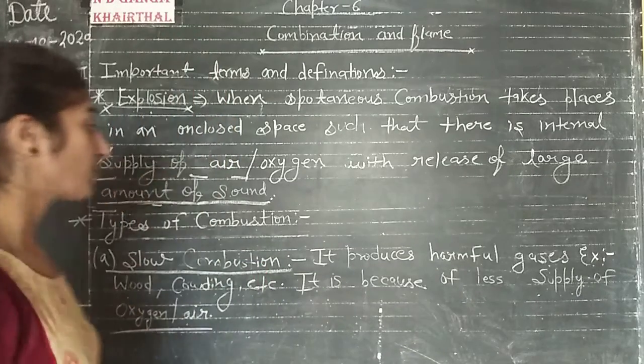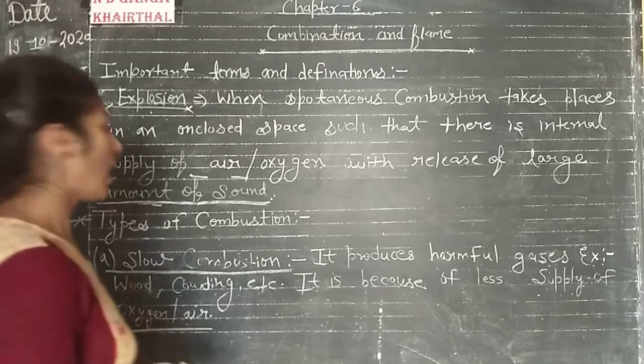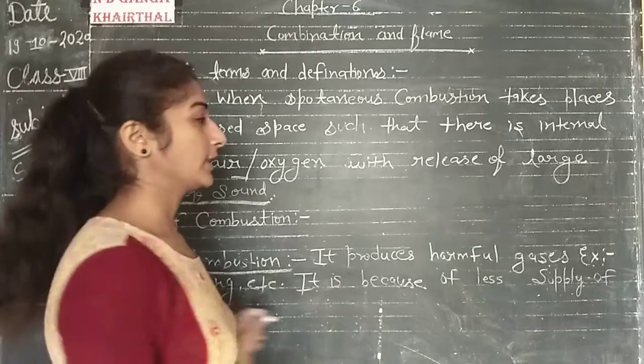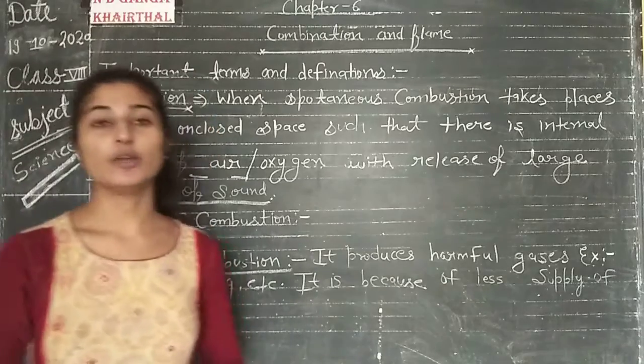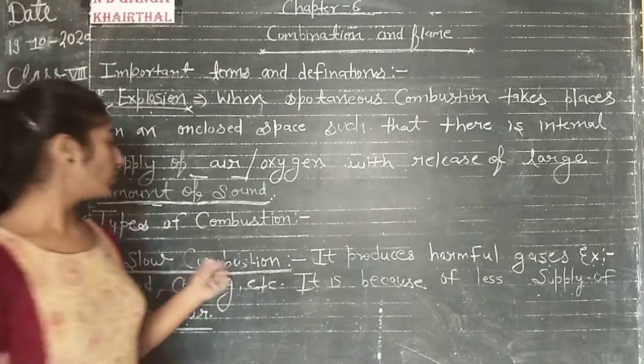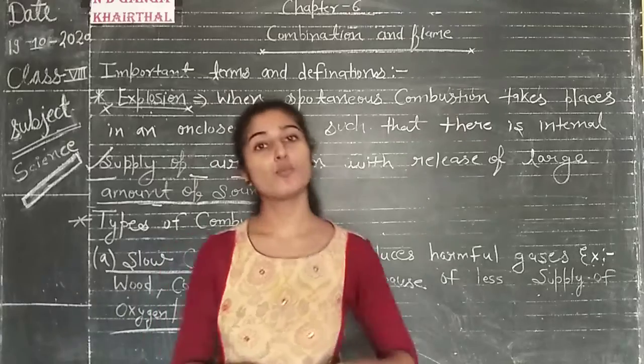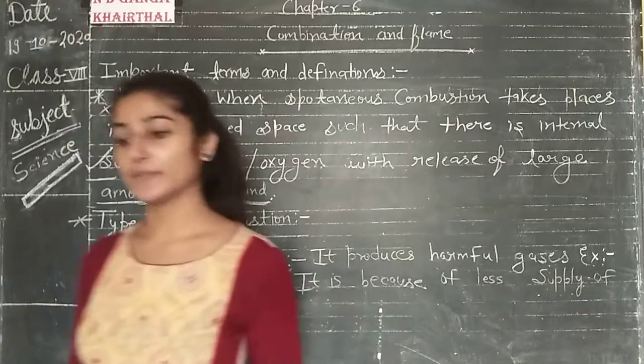When there is less supply of oxygen and air, harmful gases are produced. That is what we call slow combustion.